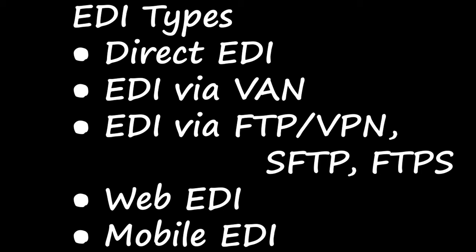So we have seen the types of EDI: Direct EDI, that is point-to-point; EDI via VAN, that is Value Added Networks; EDI via protocols like FTP or VPN, SFTP, FTPS; Web EDI, done online; and Mobile EDI, where smartphones or handheld devices are used to transfer EDI documents.